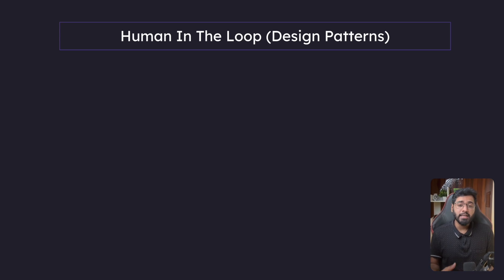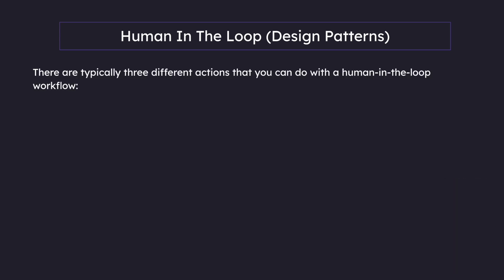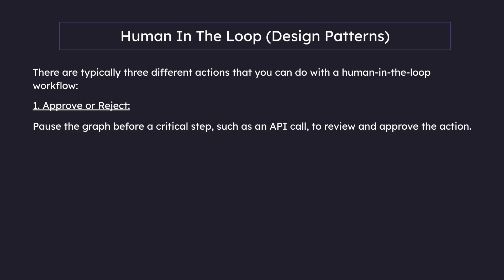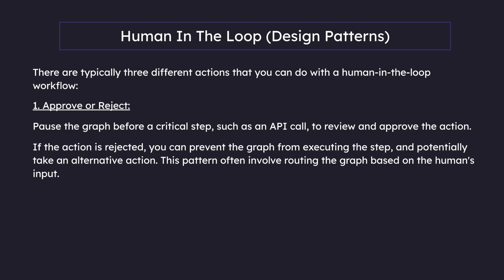Next let's look at some of the design patterns usually used with human in the loop. There are three different actions you can do. The first one is approve or reject: we can pause the graph before a critical step such as an API call to review and approve the action. If rejected, we can prevent the graph from executing that step and potentially take an alternative action. This pattern often involves routing the graph based on the human's input.